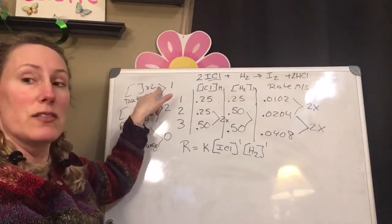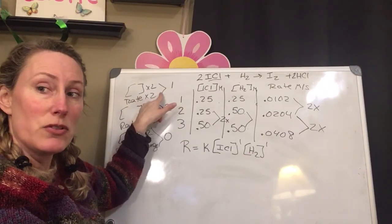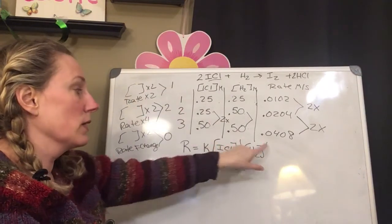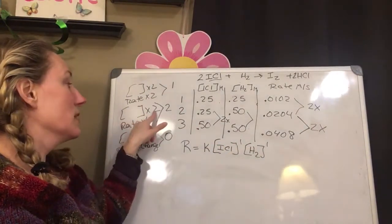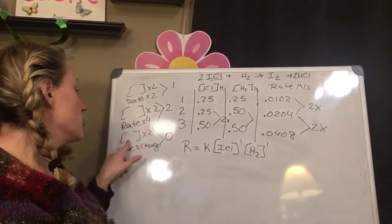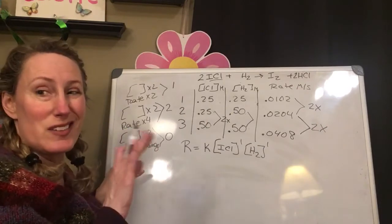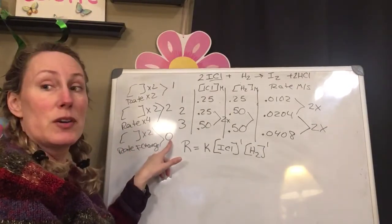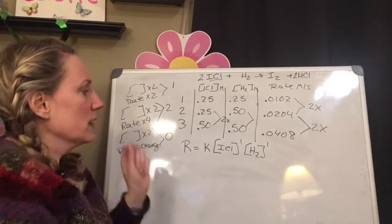So your exponents are really going to be 1 or 2 or 0. So if your concentration doubles and your rate doubles, your exponent here is a 1. If your concentration doubles and your rate quadruples, your exponent is going to be a 2. And if your concentration doubles but your rate doesn't change, your exponent is a 0. So let's continue doing this.